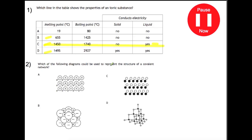Which of the following diagrams could be used to represent the structure of a covalent network? A covalent network is a lattice of covalently bonded atoms, which means you must see the bonds between the atoms and this should continue on a long-range scale. A shows positive cores with delocalized electrons — that is metallic bonding. B shows alternating positive and negative ions — that's ionic bonding. C shows small discrete molecules with covalent bonds between them — that is covalent molecular. D shows a large lattice with covalent bonds between each of the atoms, so D is our answer.